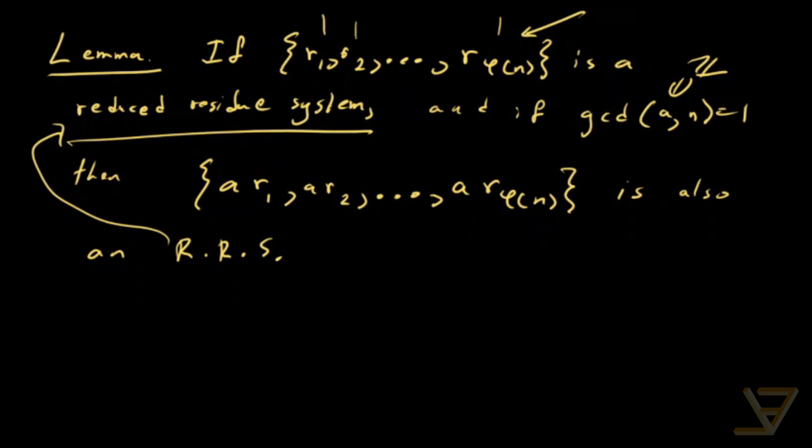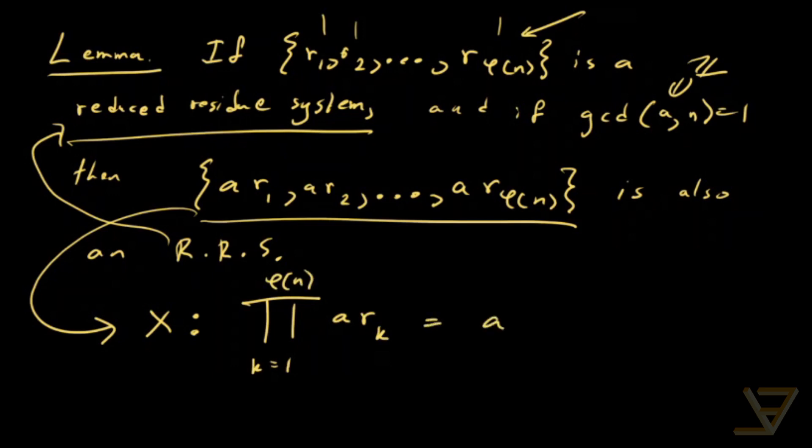What we're going to do now is multiply all these together. So if we multiply them all together, we get the product a r k for k equals 1 through phi of n.